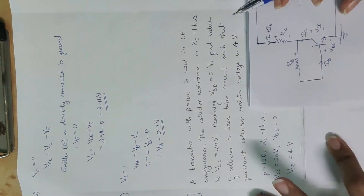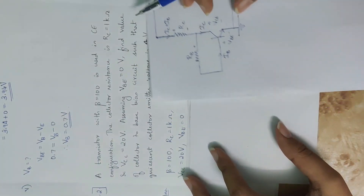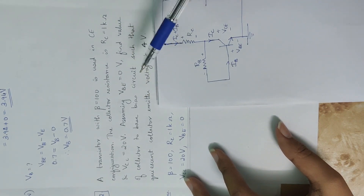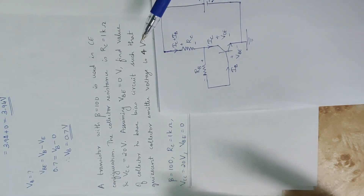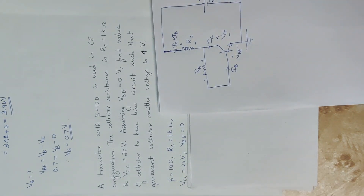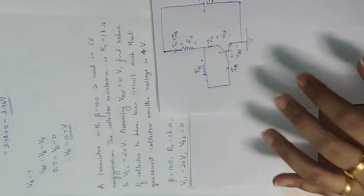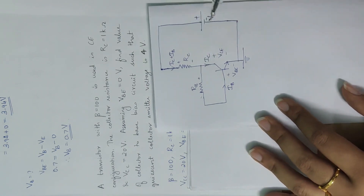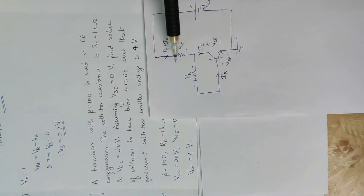This is the solution. This is the design of the collector-to-base bias circuit. The elements used are RC, RB, and supply voltage. These are the values of Rb and Vb.